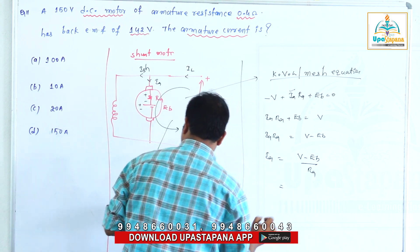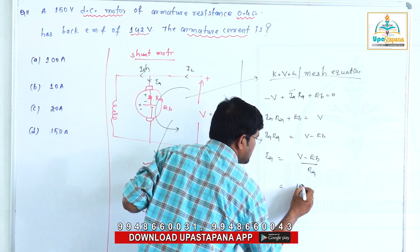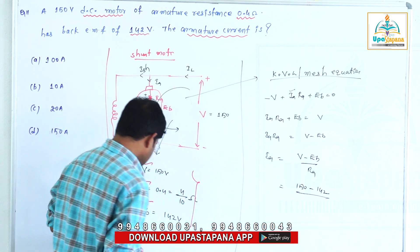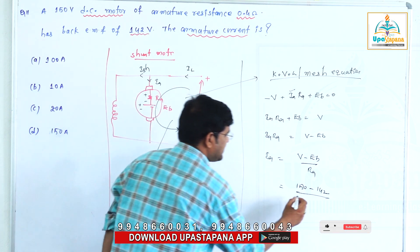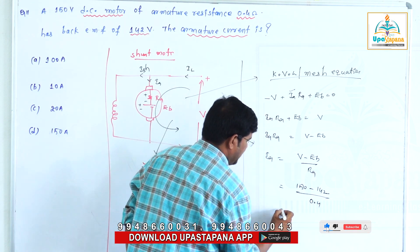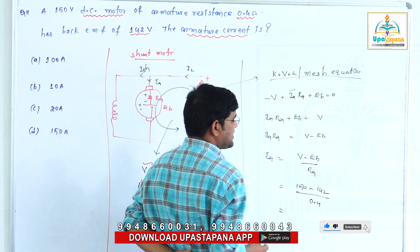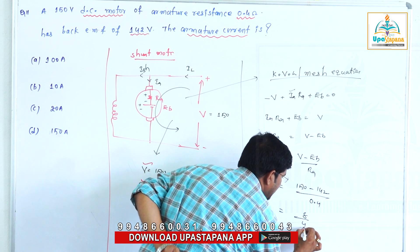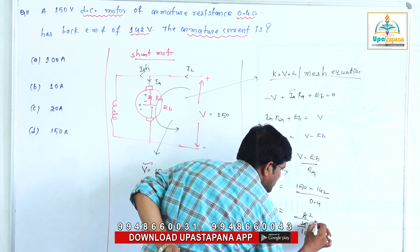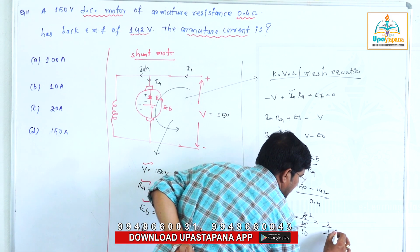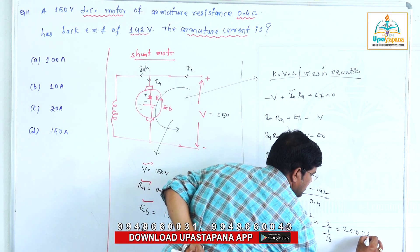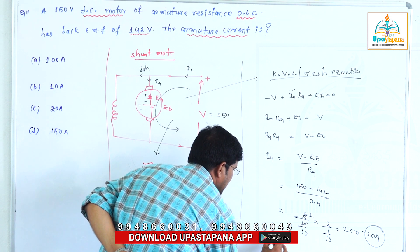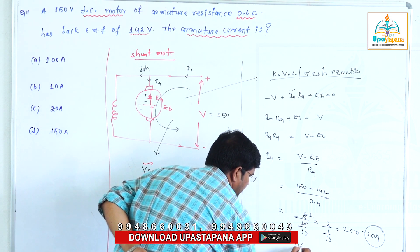Substituting the values: V = 150 V, Eb = 142 V, armature resistance Ra = 0.4 ohms (4 by 10). So IA = (150 minus 142) divided by 0.4 = 8 divided by (4/10) = 8 times (10/4) = 20 amperes. Therefore, the armature current is 20 amperes.